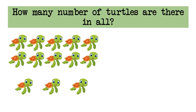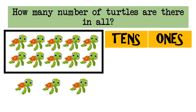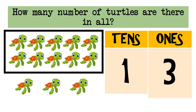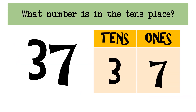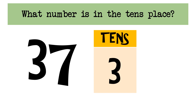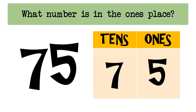How many number of turtles are there in all? The correct answer is one ten and three ones. Therefore, there are thirteen turtles in all. Good job! What number is in the tens place? The correct answer is three. Good job! What number is in the ones place? The correct answer is five.